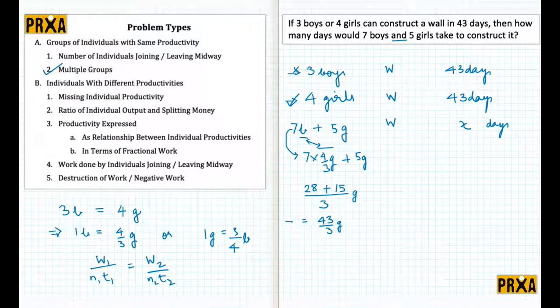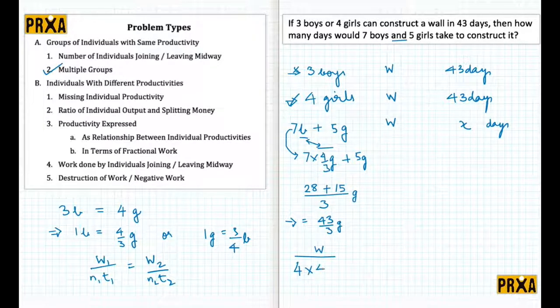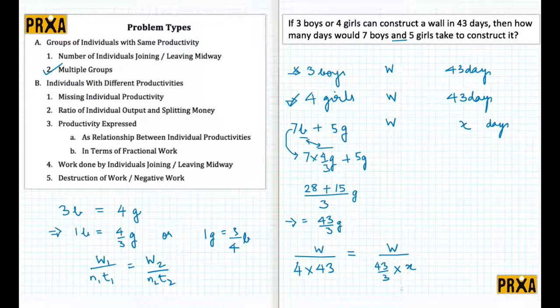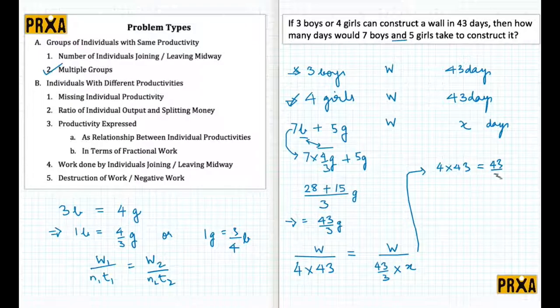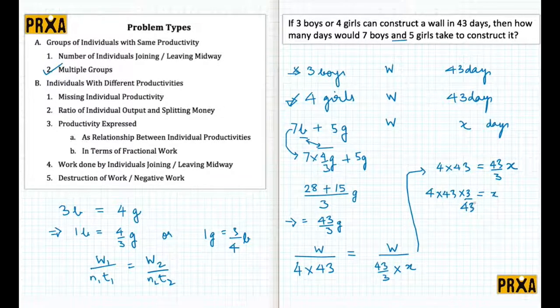So let me just write down w1 upon n1 t1 of this situation. I have work done: one wall built by four girls in 43 days should be equal to one wall built by 43 by 3 girls in x days. I notice that the numerators being equal, denominators must be equal. So I'll just use denominator equals denominator: 4 times 43 equals 43 by 3 x. So x equals 4 times 43, 3 by 43. Let me just cancel out 43, so we get x equals 12 days.